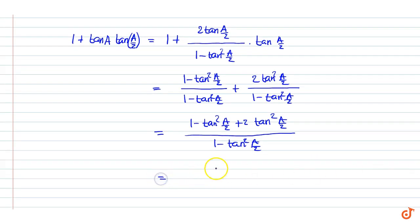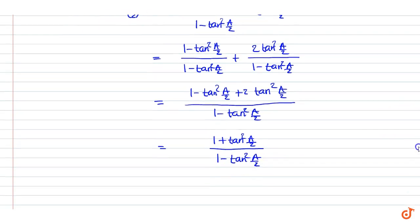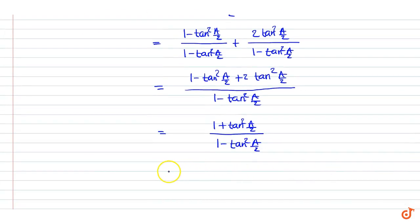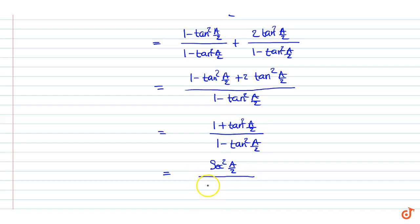This is equal to 1 plus tan²(A/2) divided by 1 minus tan²(A/2). This is equal to sec²(A/2) divided by... since 1 + tan²(A/2) = sec²(A/2).